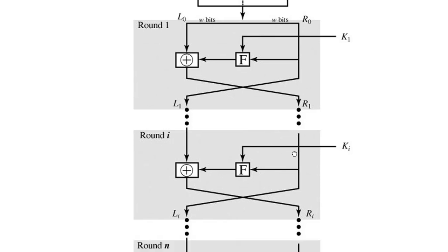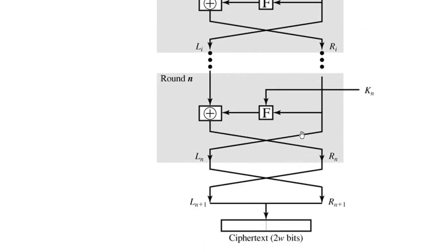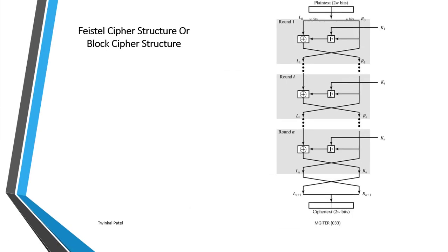This process is continuously applied for all rounds. At the last round, the left and right halves are swapped, and these two swapped parts are merged together to generate the ciphertext. This is the encryption process of the Feistel cipher structure, which is also the generalized diagram of a block cipher structure.